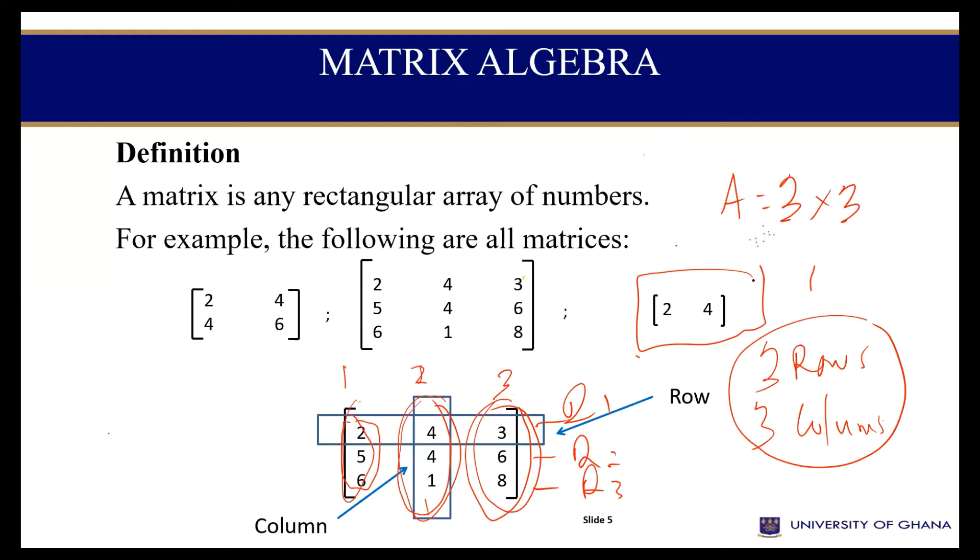What about this guy here? I have row 1, column 1, column 2. So this is called a 1 by 2 dimension. You can do the same for this guy here. Row 1, row 2, row 3. Column 1, column 2, column 3. So this is a 3 by 3 dimension. Similarly, this is row 1, row 2, column 1, column 2. This is a 2 by 2 dimension.